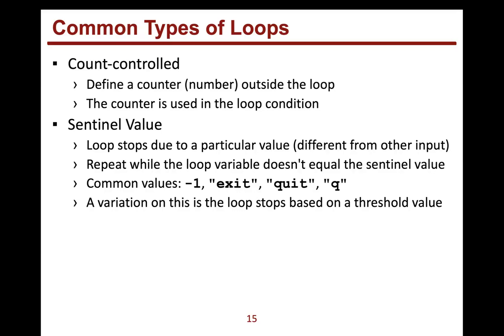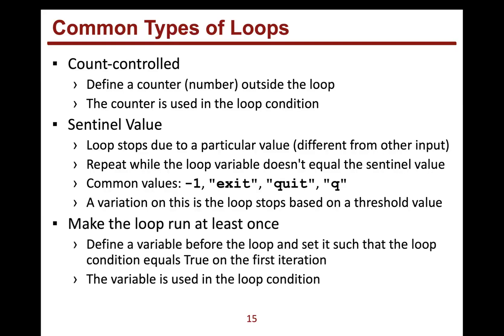There's also a variation called a threshold. For example, instead of stopping only at negative one, we stop at any negative number. It's similar to a sentinel, but instead of using equality to compare, you use less than or equal to negative one as your stopping condition.